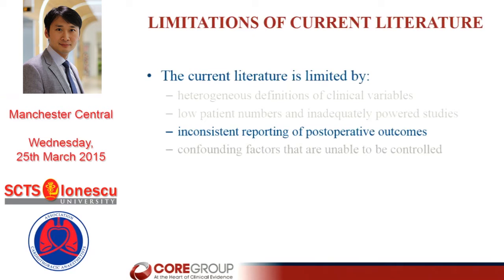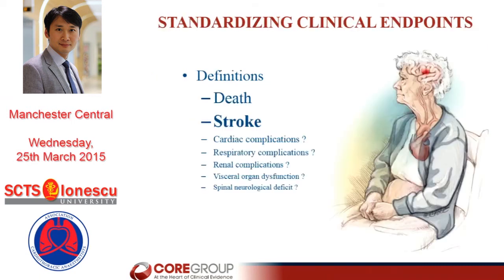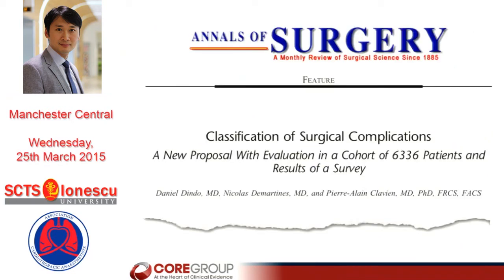After aggregating and collecting all the data from different centres, we found there has been inconsistent reporting of post-operative outcomes. Most centres report very well on death and stroke, but there is little information on cardiac complications, inconsistent reporting of respiratory, renal, and visceral organ dysfunction, and spinal cord injury. Therefore, it was important for us about a year ago to come up with a standardized classification for reporting post-operative outcomes after arch surgery.